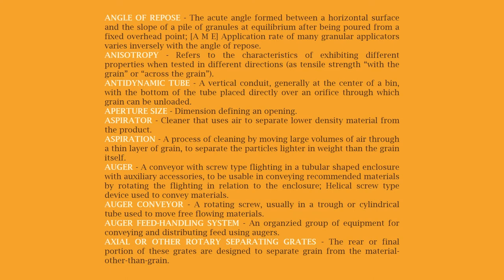Auger: a conveyor with screw-type flighting in a tubular-shaped enclosure with auxiliary accessories, used to convey recommended materials by rotating the flighting in relation to the enclosure; a helical screw-type device used to convey materials. Auger conveyor: a rotating screw, usually in a trough or cylindrical tube, used to move free-flowing materials. Auger feed handling system: an organized group of equipment for conveying and distributing feed using augers.